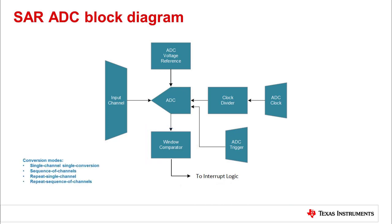Four different conversion modes are supported. In single channel single conversion mode, a single channel is converted once. In sequence of channels mode, a sequence of channels are converted one time each — for example, channels 1, 2, and 3 get converted once. In repeat single channel mode, a single channel is converted repeatedly. In repeat sequence of channels mode, a sequence of channels is converted repeatedly — for example, channels 1, 2, and 3 would get converted multiple times.